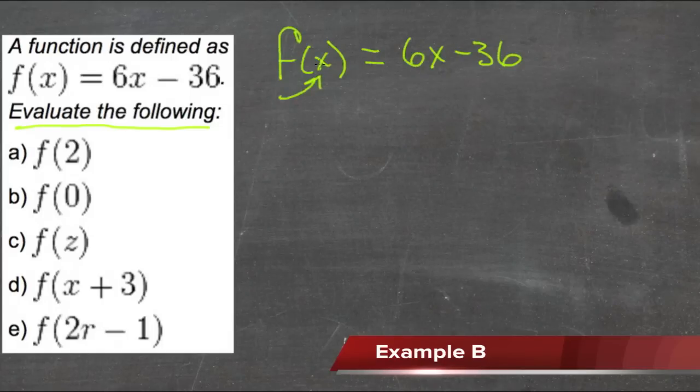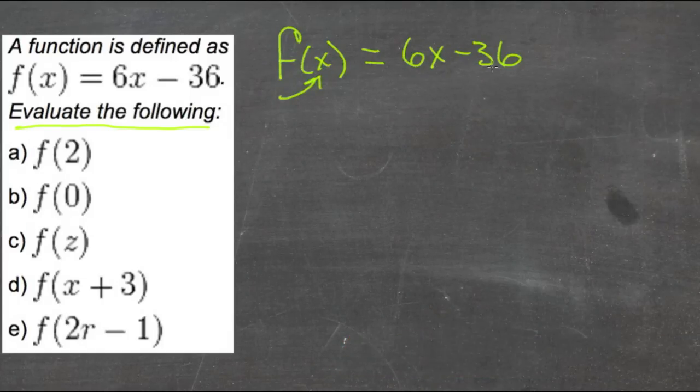What this function really says is that function f performed on x is 6x minus 36. So if we're going to perform function f on something else, that something else would be put in place of x on the other side.